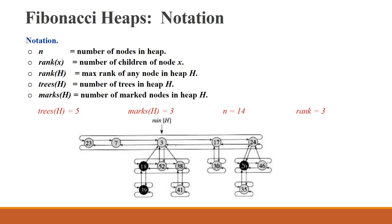Now Fibonacci Heap notation. First is n equals number of nodes in heap. Counting nodes: 1, 2, 3, 4, 5, then 6, 7, 8, 9, 10, 11, 12, 13, 14. It means number of nodes in the heap is 14.